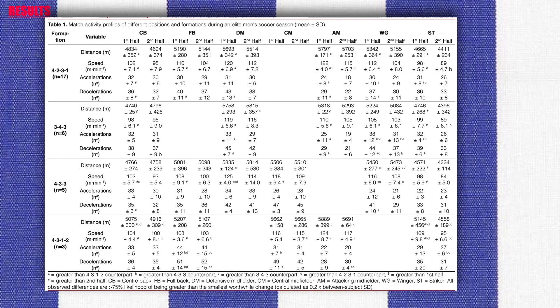The table shows the match activity profiles for the seven positions, grouped by periods of play and the four tactical formations used throughout the season. For whole game demands, center backs had greater activity profiles in the first half compared to the second half for all whole period metrics in the 4-2-3-1 formation. Similarly, strikers covered more distance in the first half across all formations, and defensive midfielders and wingers covered slightly more distance in the first half than the second half.